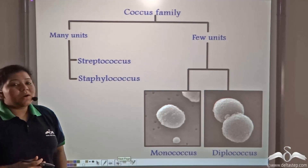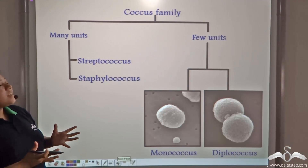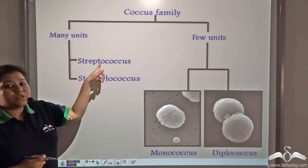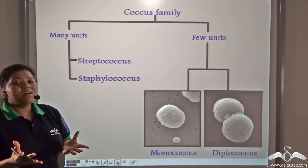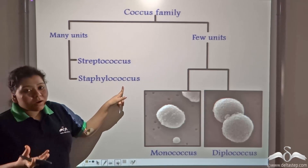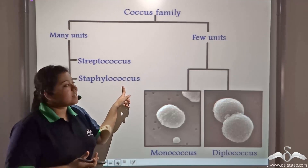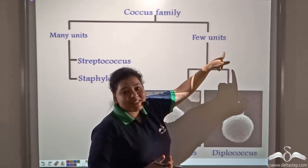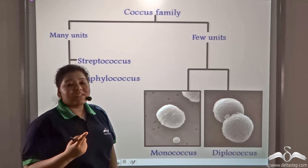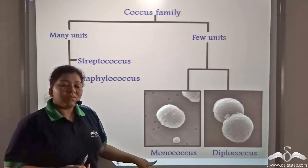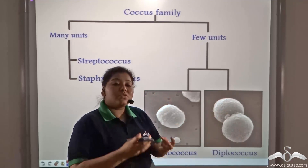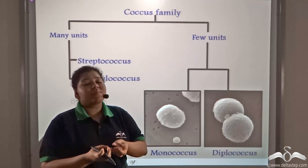So we have discussed spherical-shaped bacteria that contain many units and form a chain-like structure, as in Streptococcus, and form the appearance of a bunch of grapes, as in Staphylococcus. These coccus-shaped or spherical-shaped bacteria can also be present in few units — as one unit known as Monococcus, where 'Mono' means single, or as Diplococcus, where there are two spherical-shaped bacteria.